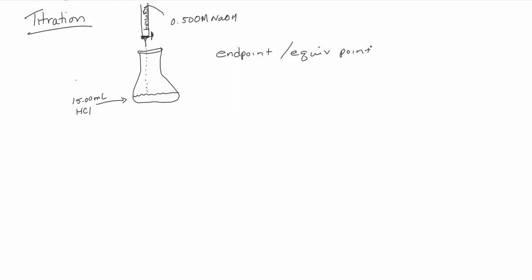Because the burette is so well calibrated and I took a careful initial reading, I can take my final volume reading and know exactly how much of this calibrated sodium hydroxide I have used. Whenever you have a titration problem where you need to calculate, the first thing you should do is identify what your two substances are that are reacting together. Most of the time with a titration, it's going to be an acid and a base.